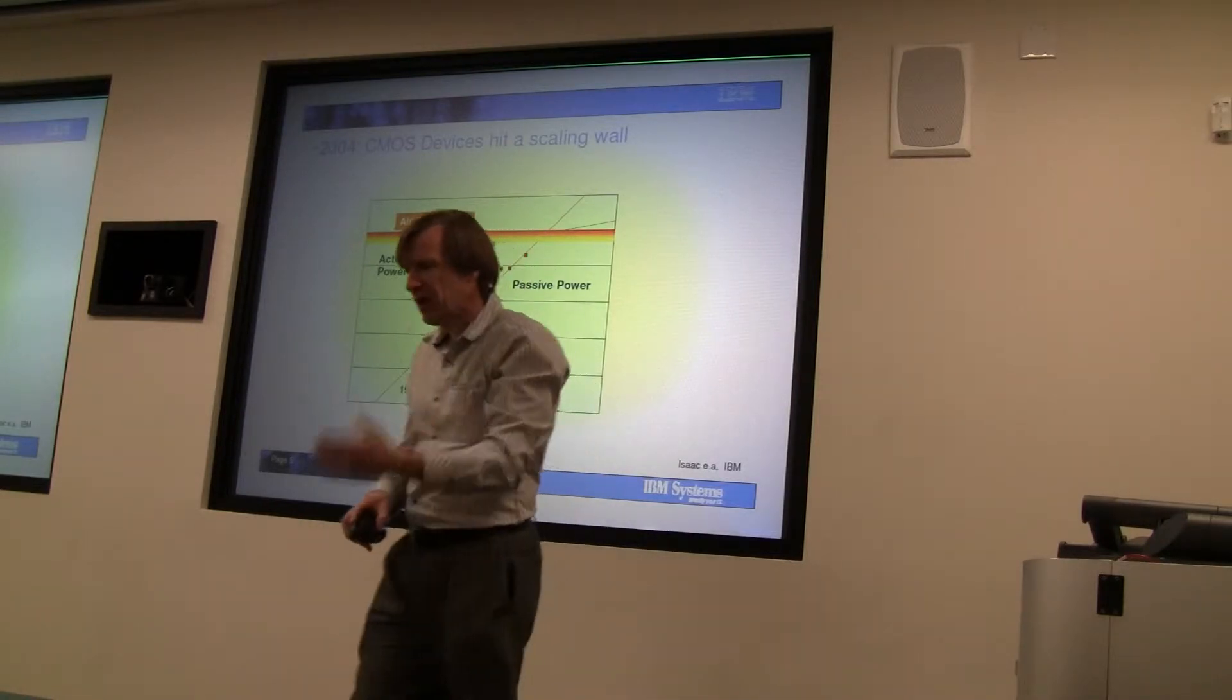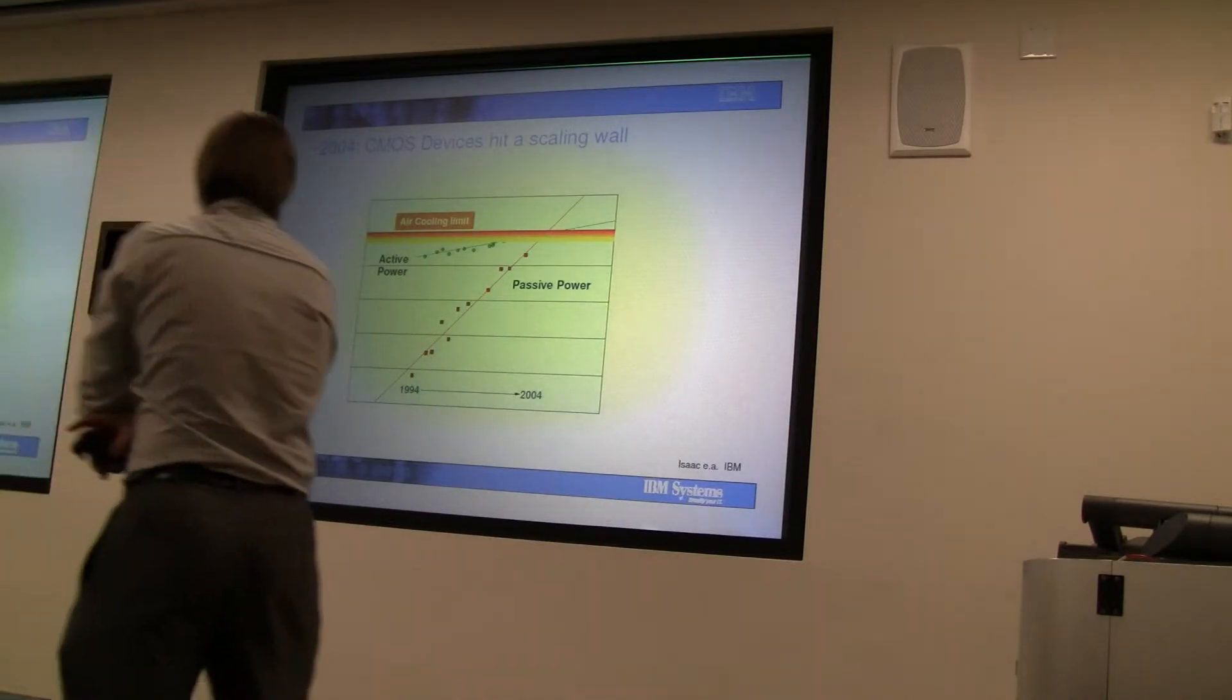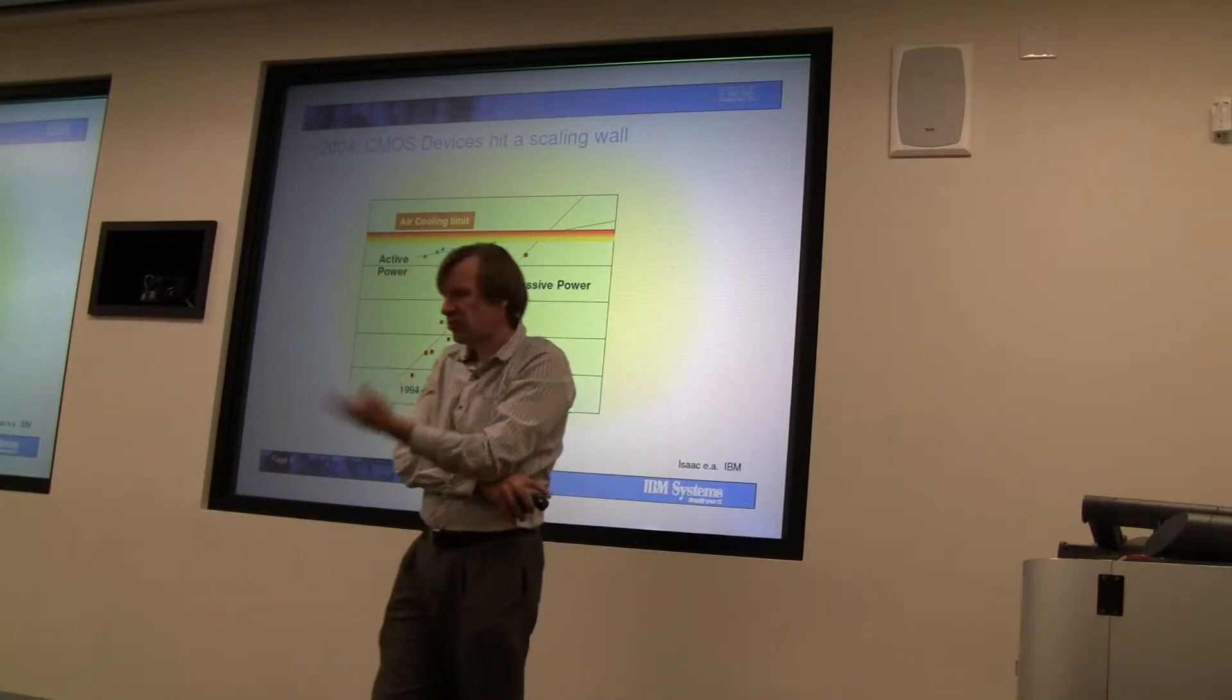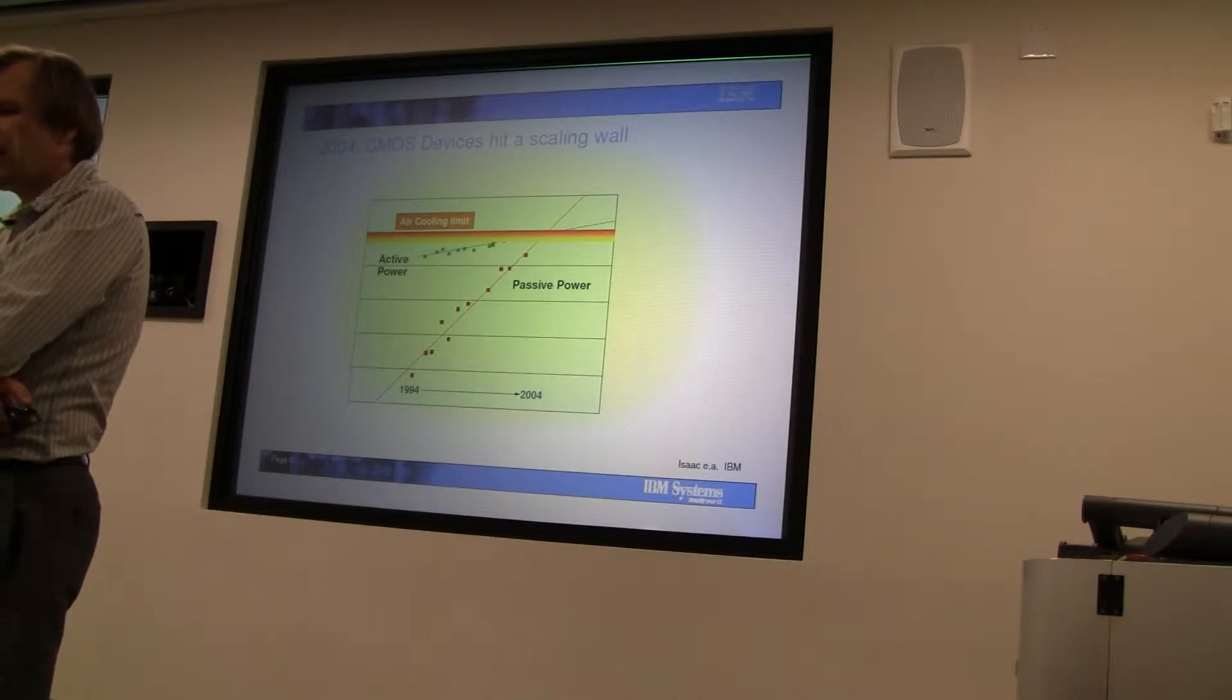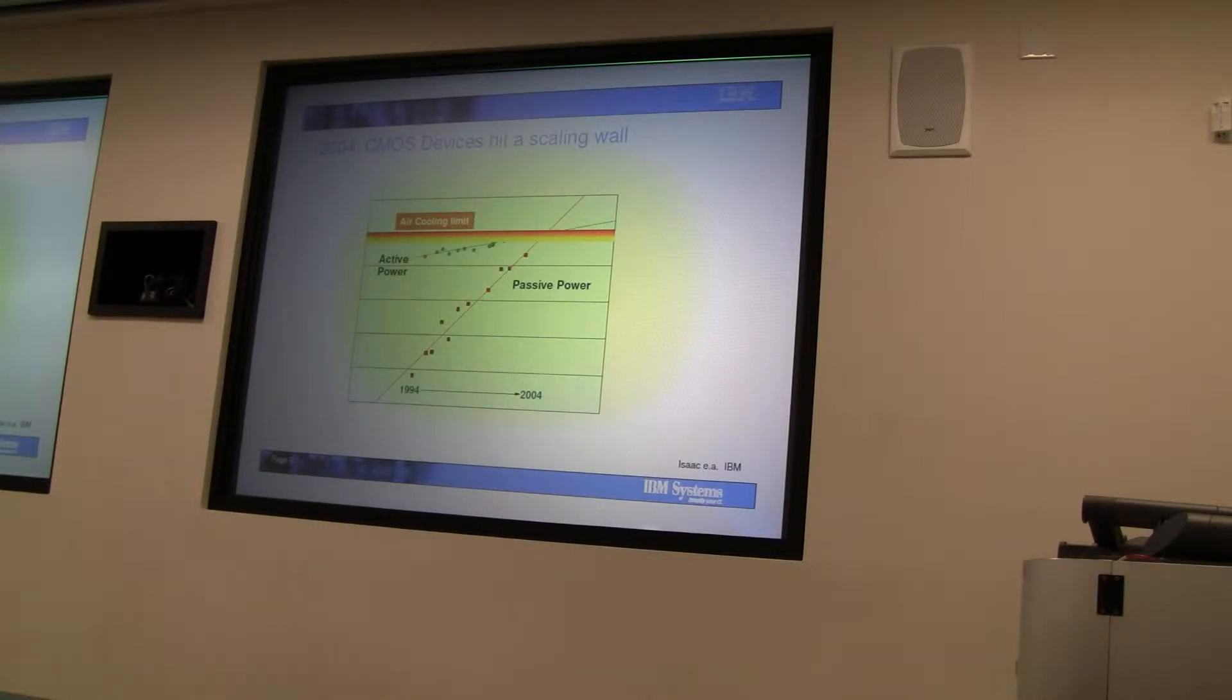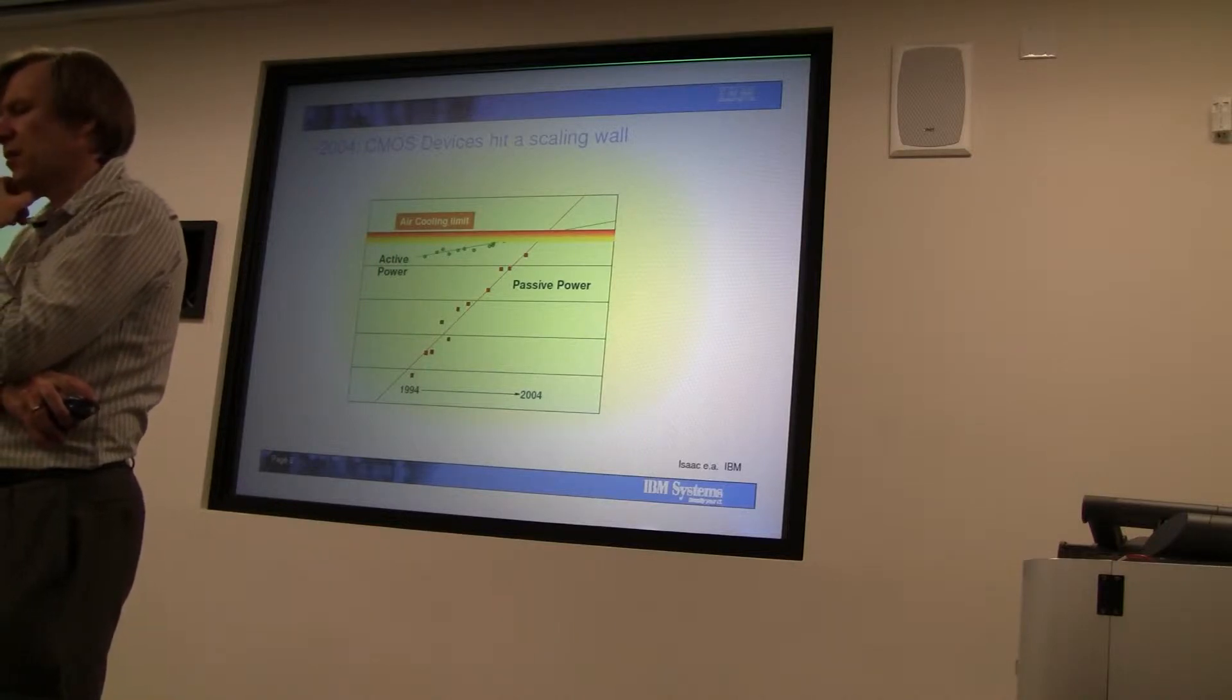There's actually another curve - the gate oxide tunneling curve - that also came on very strong. As a result, we've been stuck with the oxide thicknesses roughly where they were at 45 nanometer. We've compensated by introducing high-K material that gives us a step forward, but fundamentally it was the end of scaling, at least in that dimension.